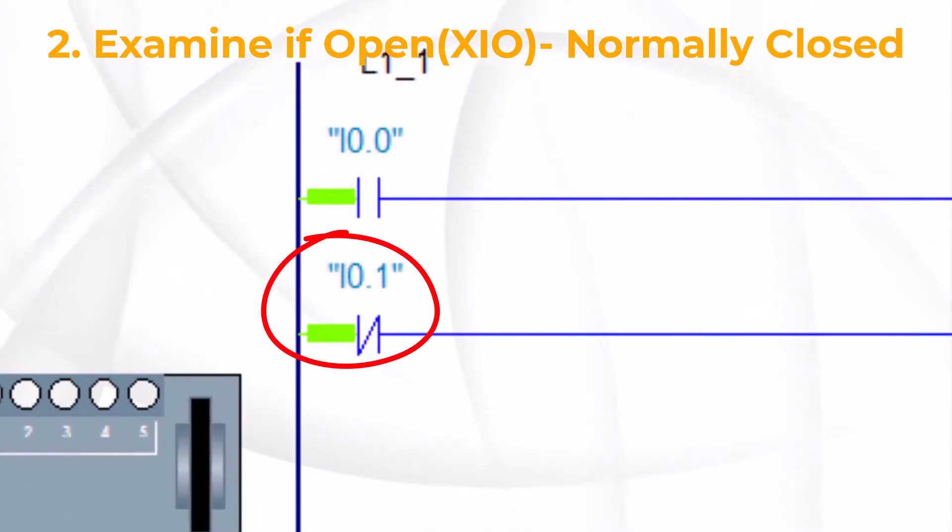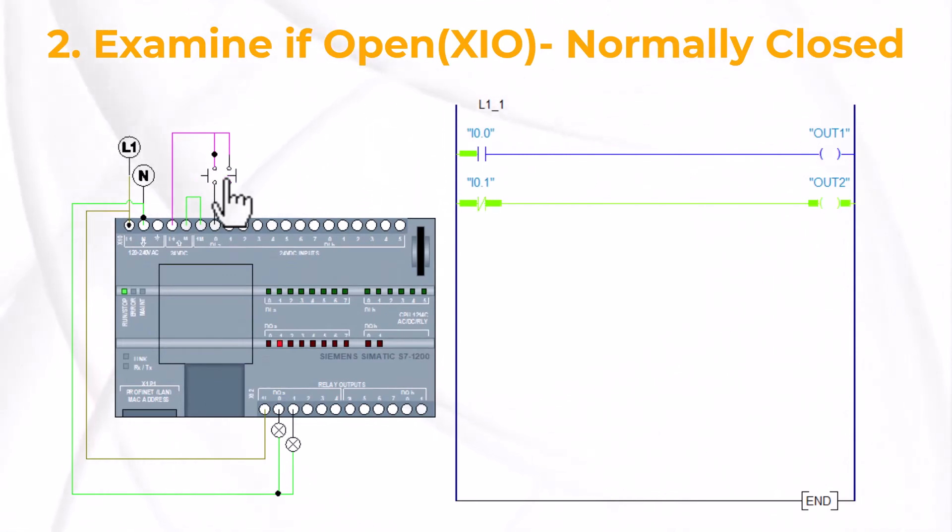XIO, examine if open or normally closed contact. The XIO instruction looks and operates like a normally closed relay contact. There is a memory bit associated with each XIO instruction that is linked to the status of an input device or internal condition.